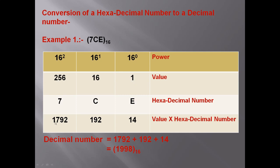We add all these values: 14 plus 192 plus 1792 equals 1998. We write the base as 10 — not 16 — because we have converted to a decimal number. By mistake I had written 16, but it will be base 10.